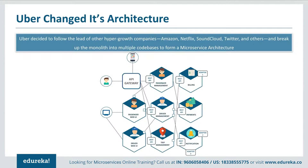This is how Uber's new architecture looks. The key change is the introduction of an API gateway which connects all drivers with passengers. From the API gateway, all internal points are connected — such as passenger management, trip management, driver management, and so on. Basically, anybody who connects to the API gateway gets automatically connected to all the microservices. Another change is the introduction of individual separate deployable units, meaning any one unit can be deployed without disturbing the others.